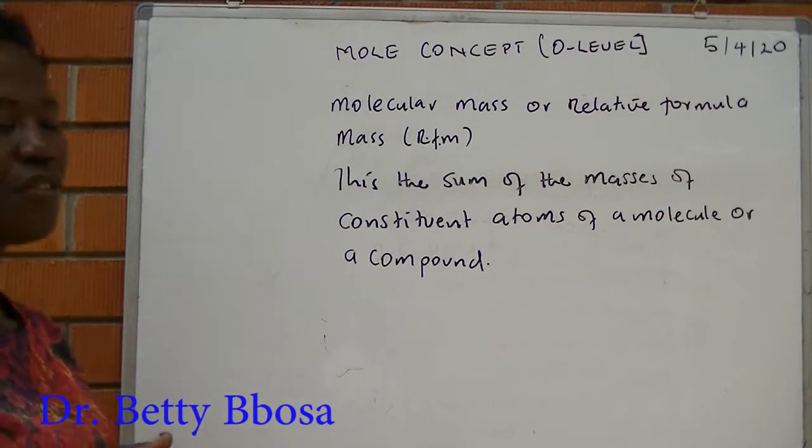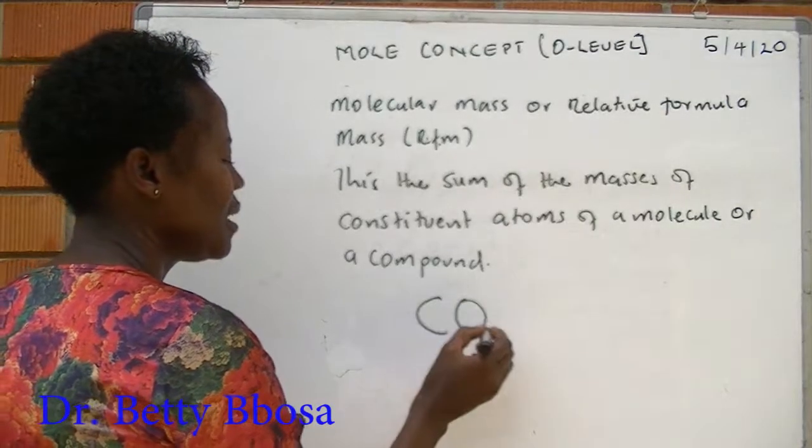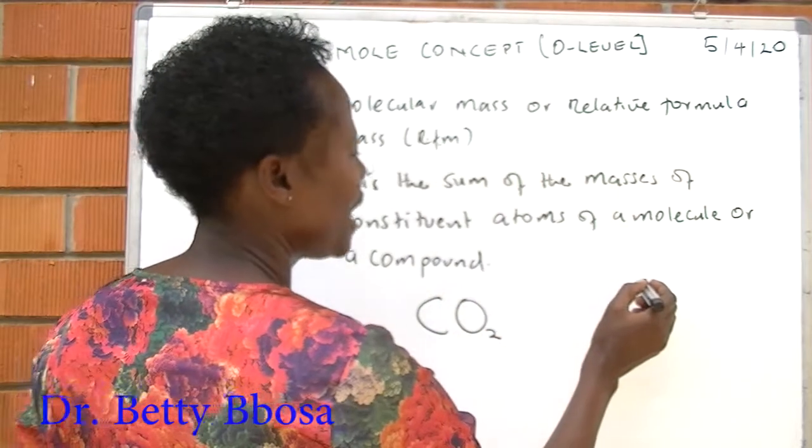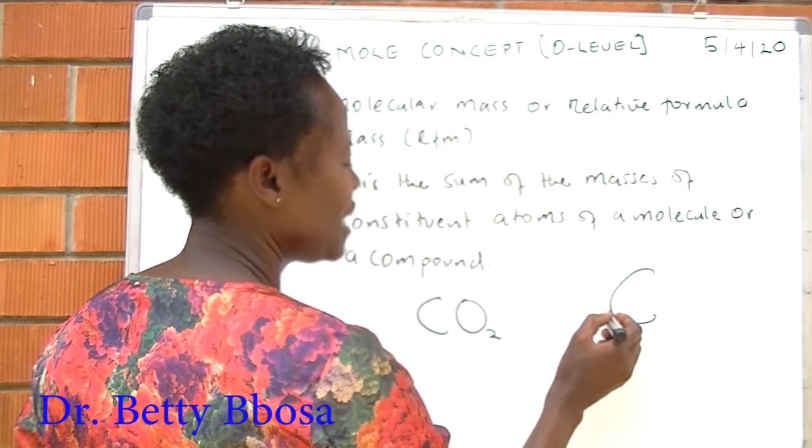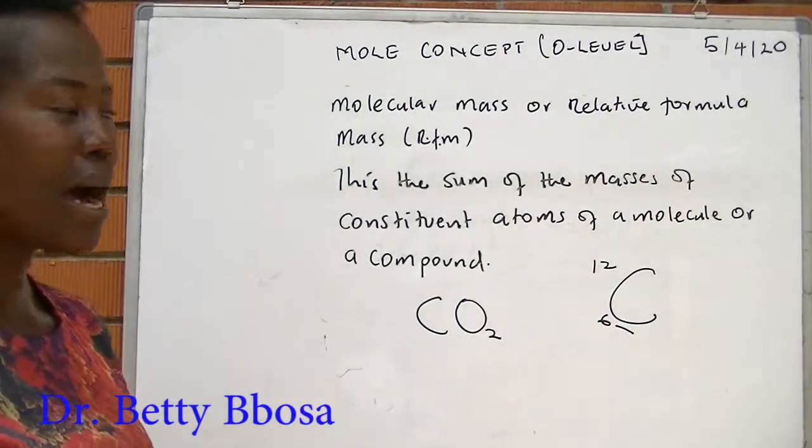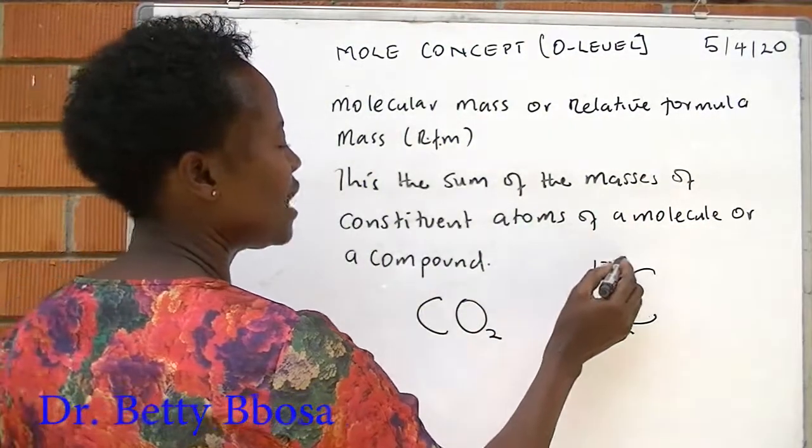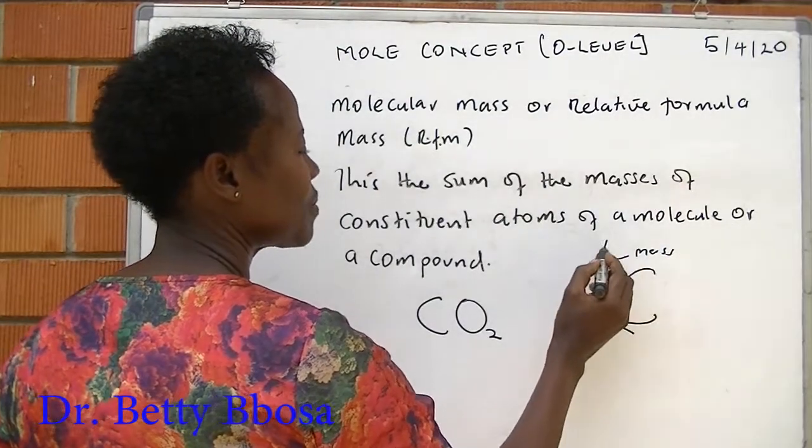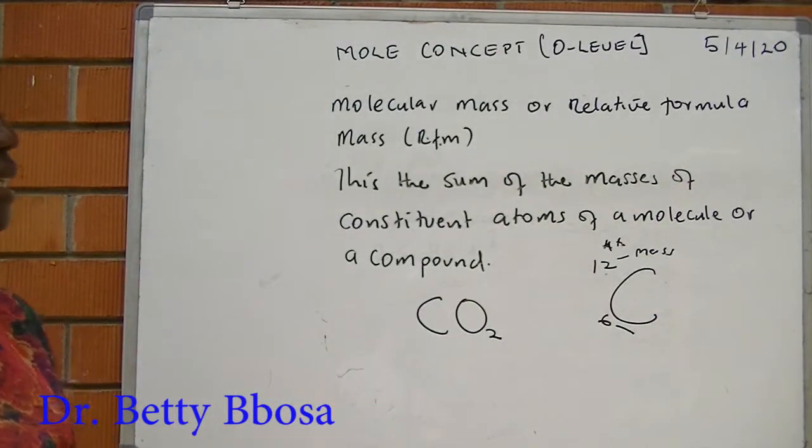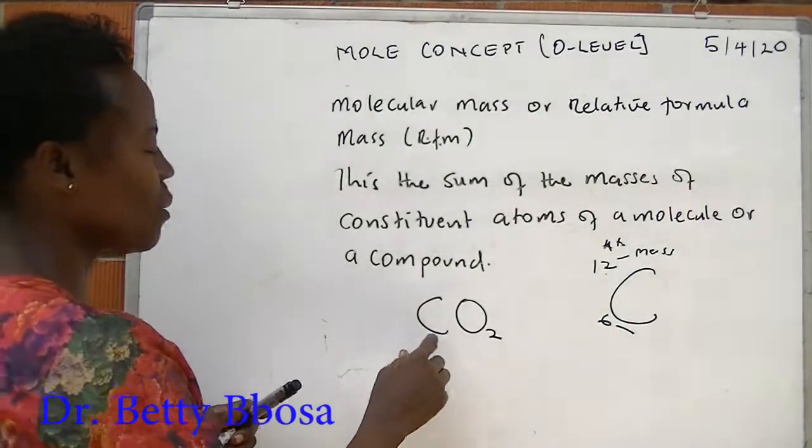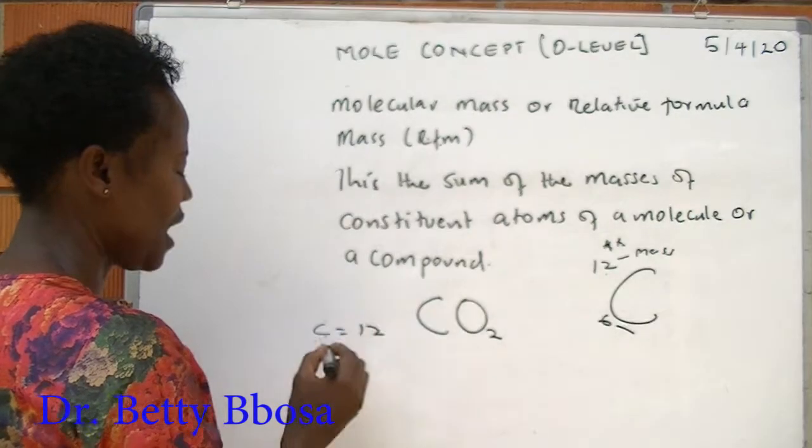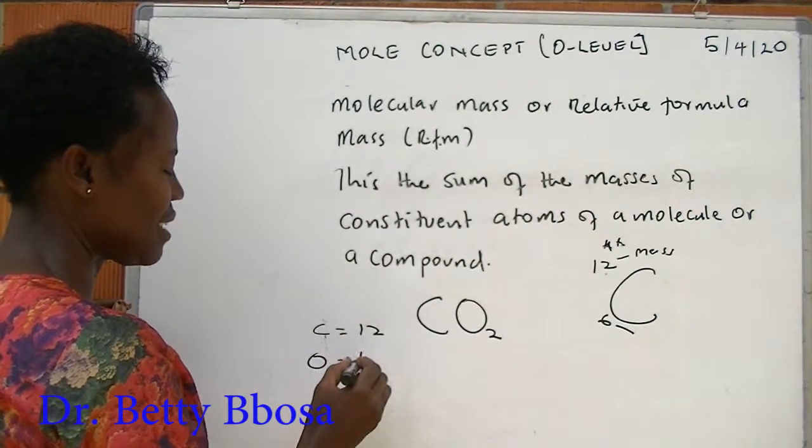Suppose we have carbon dioxide molecule. You remember when you were studying atomic structure, we had an atom - carbon had 6 and 12, where 6 represented the atomic number and 12 the atomic mass. To get the molecular mass of carbon dioxide, we have to add all the atomic masses of carbon and oxygen. Carbon is given to us as 12 and oxygen is given to us as 16.